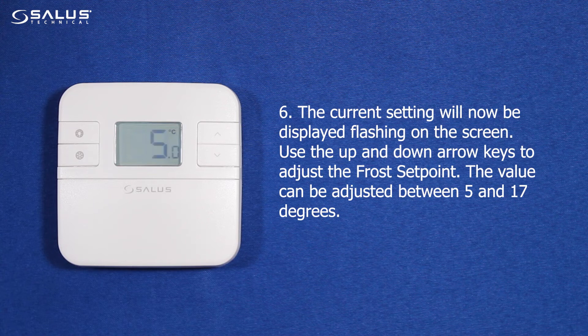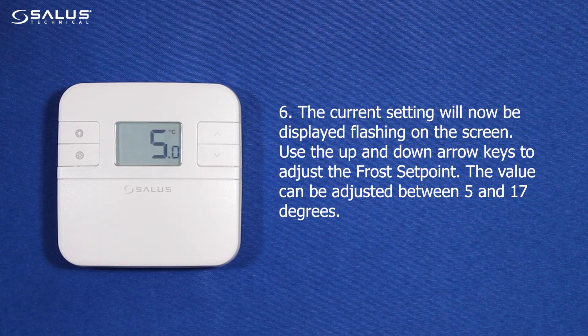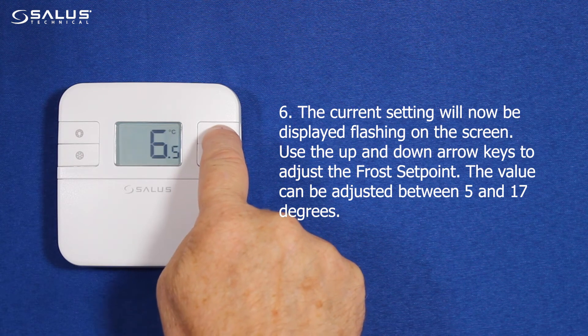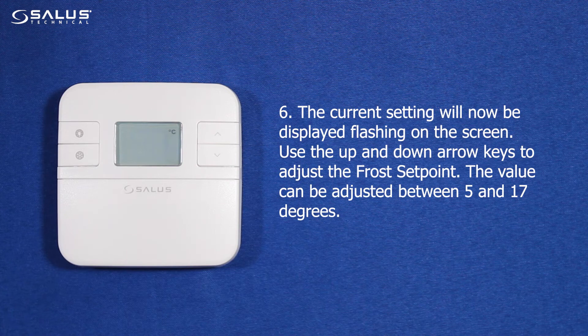Step 6: The current setting will now be displayed flashing on the screen. Use the up and down arrow keys to adjust the frost set point. The value can be adjusted between 5 and 17 degrees.